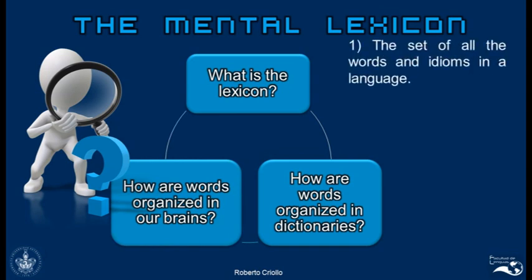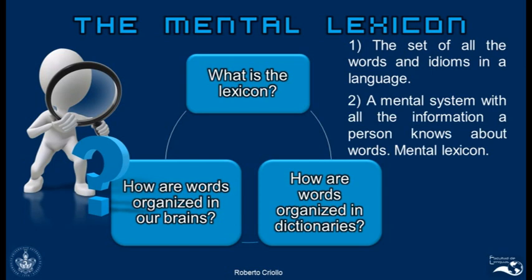The answer to the first question is that lexicon may refer to either the set of all of the words and idioms in a language — that means all of the lexical items in a language — or it can also refer to the mental system that contains all of the information that we know about words. We call this our mental lexicon. Words are organized in dictionaries in alphabetical order, so there is no relationship between one word and the other; the organization is random, just following alphabetical order. But in our brains, words are organized according to central meanings and also according to the relationships they hold with other words.